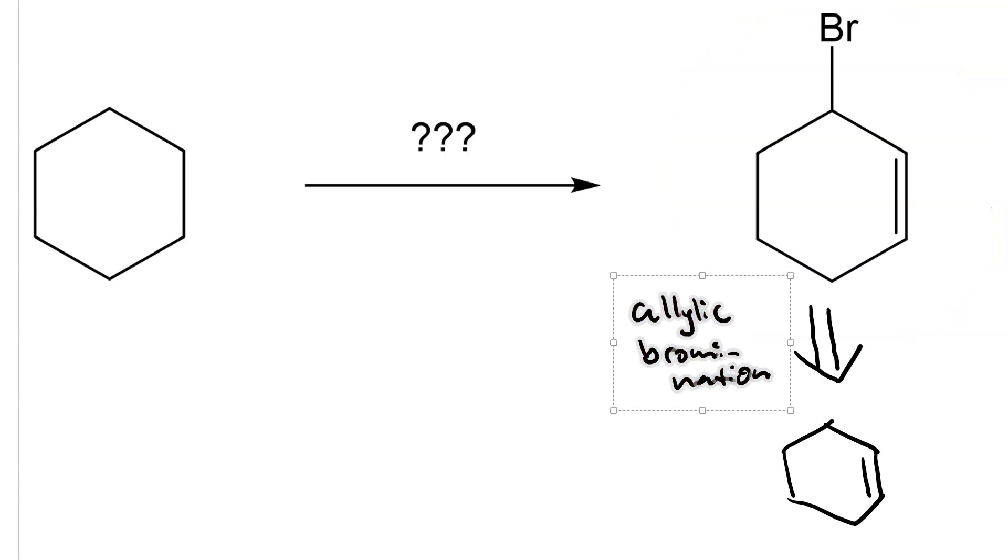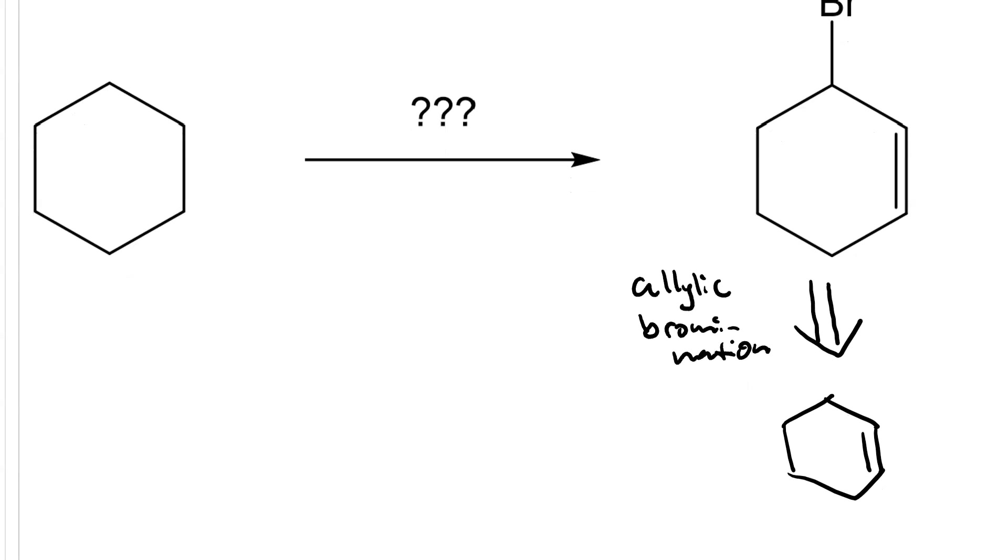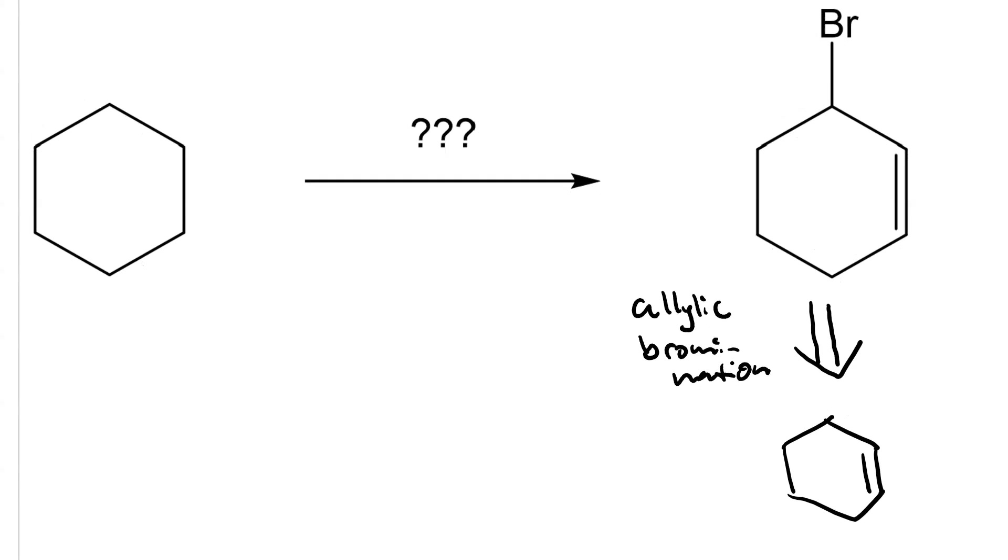The reagents we need to accomplish allylic bromination are N-bromosuccinimide in the presence of ultraviolet light, h-nu.